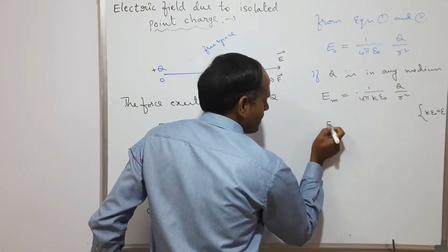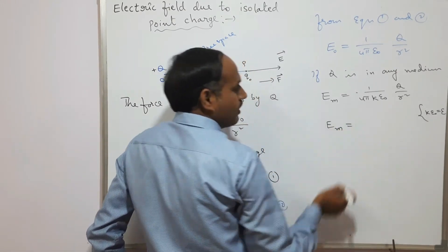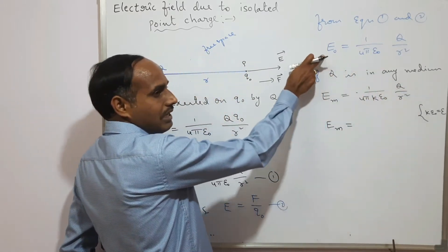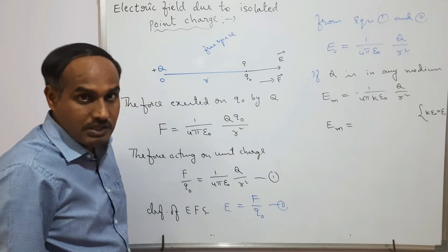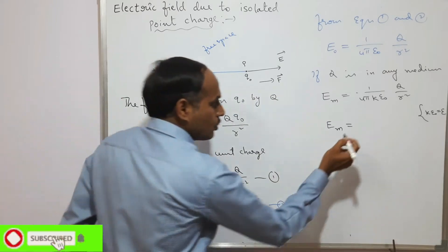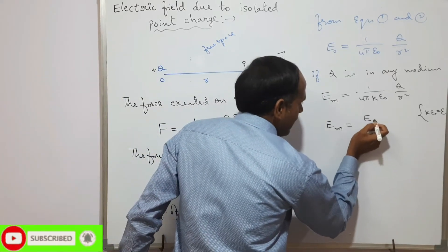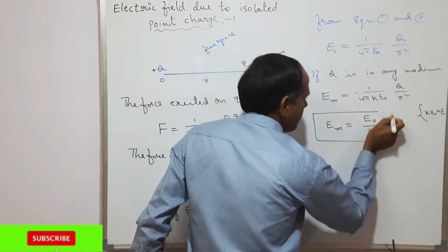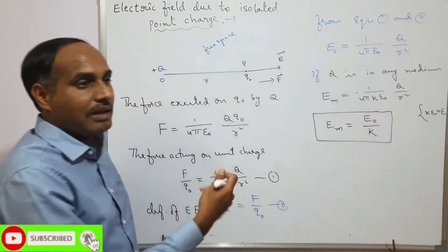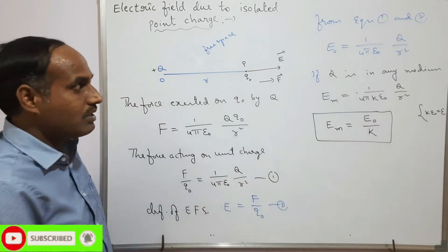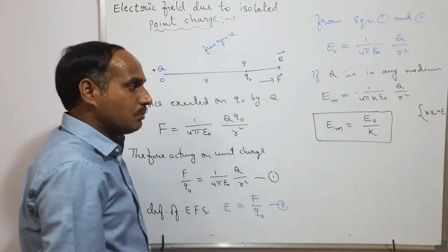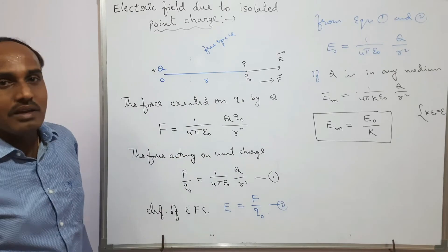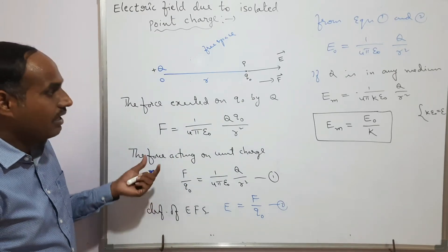So we can write: E in a medium = (1/4πε_medium) × q / r². This means E in a medium equals (1/k) times E in free space. Therefore, the electric field strength in a medium is always less than the electric field strength in free space.